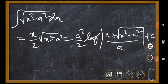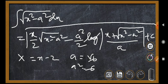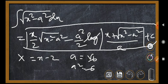Now we identify our substitution: x is replaced by (x minus 2), and a squared is equal to 6, so a is equal to root 6. We apply the formula using x equal to (x minus 2) and a squared equal to 6.